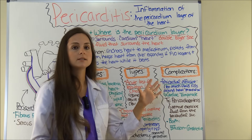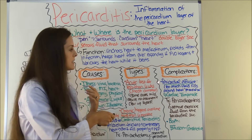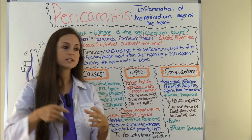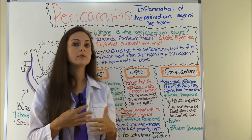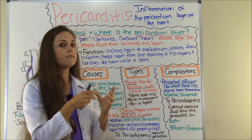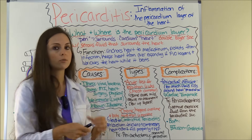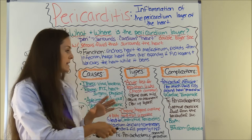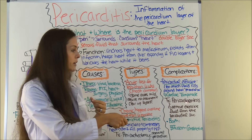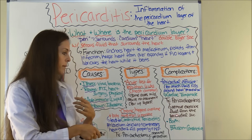Now let's look at the complications of pericarditis. Another complication besides constrictive pericarditis is pericardial effusion. This is where too much fluid enters the pericardial space where serous fluid normally resides, and it can develop due to inflammation over time. This can become very dangerous if not treated quickly, and the patient can enter into cardiac tamponade, which I'll discuss during nursing interventions. Treatment for pericardial effusion is a pericardiocentesis, where they go in with a sterile needle and remove the excessive fluid from the pericardial sac.